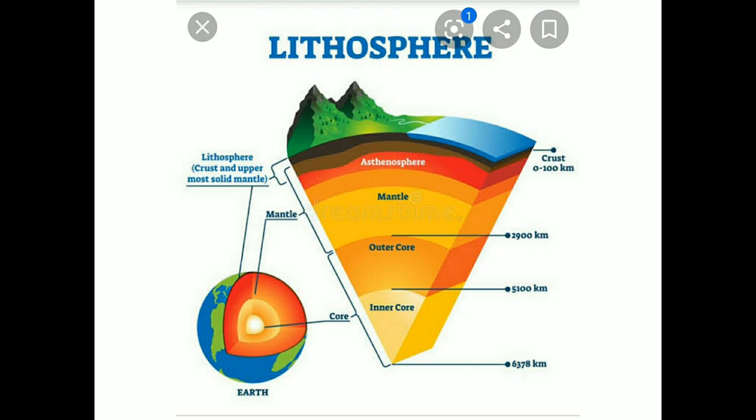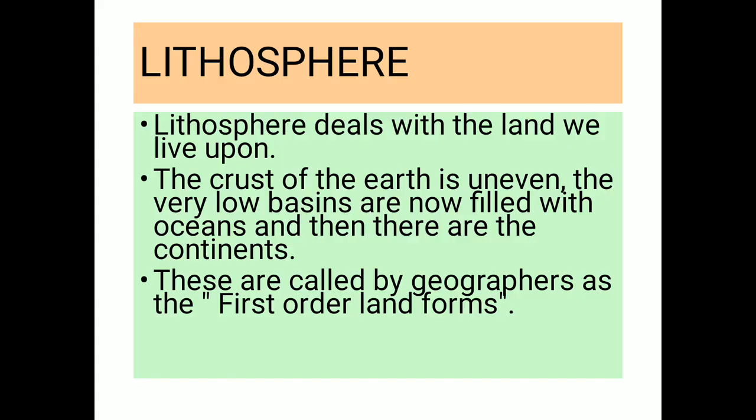In the picture you can clearly see that the mountains are located on the topmost layer of the earth, completely covered with rocks, and so it is called lithosphere. Lithosphere deals with the land where we live. The crust of the earth is uneven. The very low basins are filled with oceans and there are the continents.